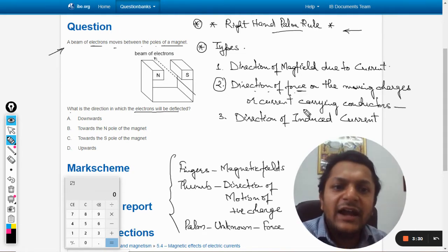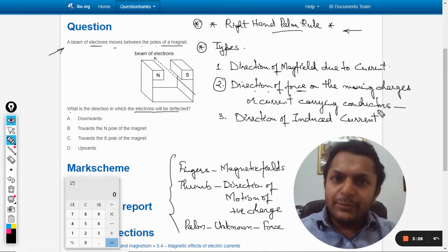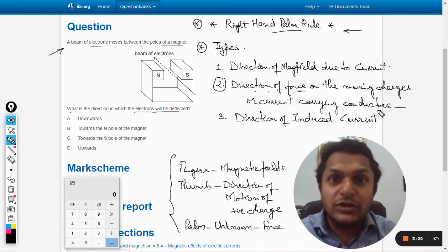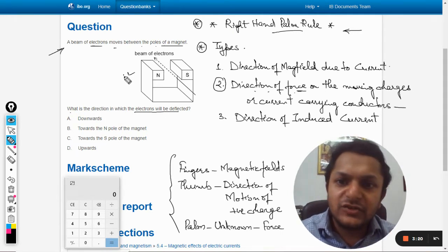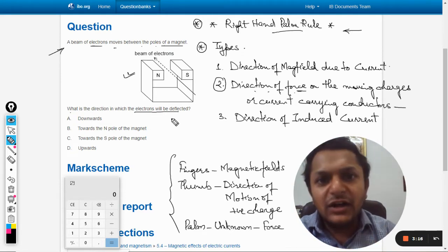In type 2, we find the direction of the force on the moving charges and current carrying conductors. So in type 2, we find the force on charged particles which are moving through the magnetic field, which this question particularly talks about.